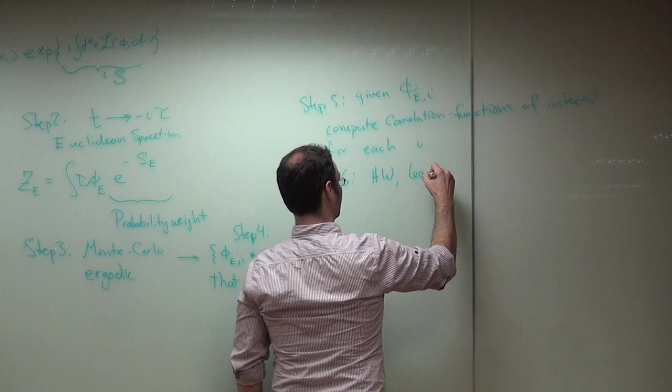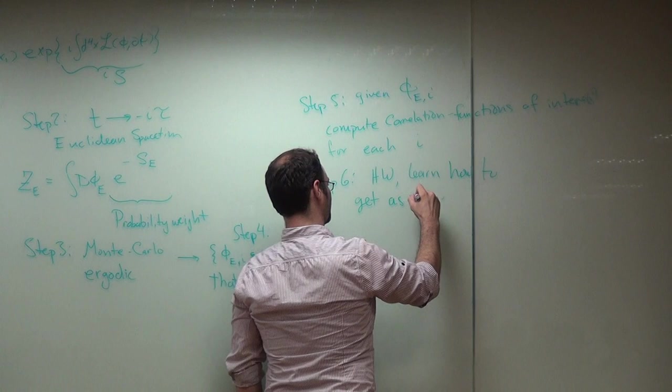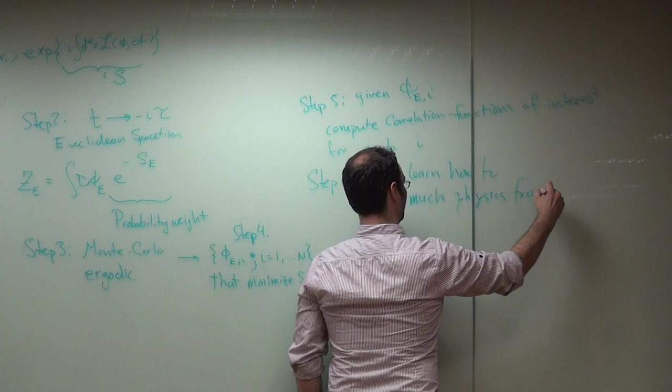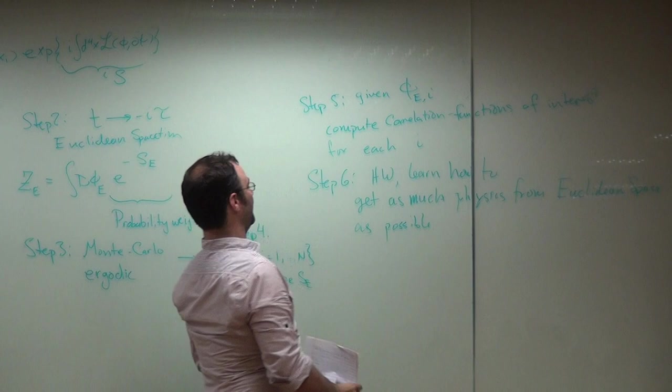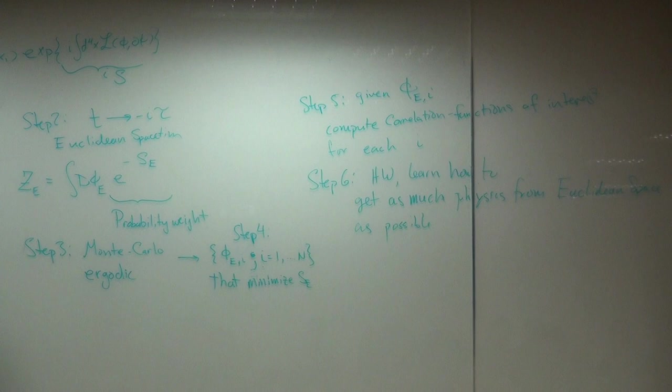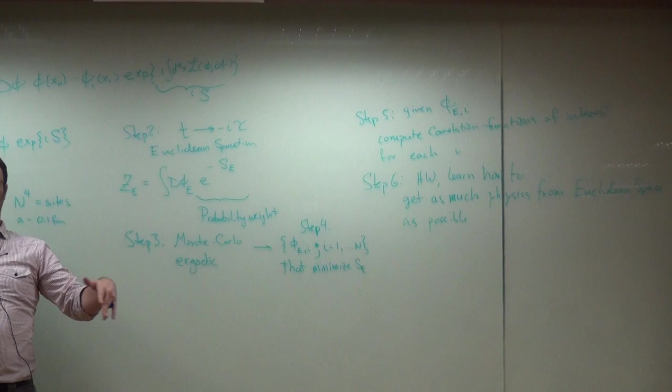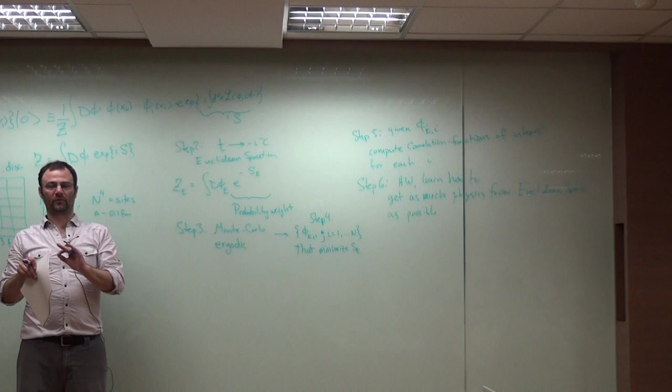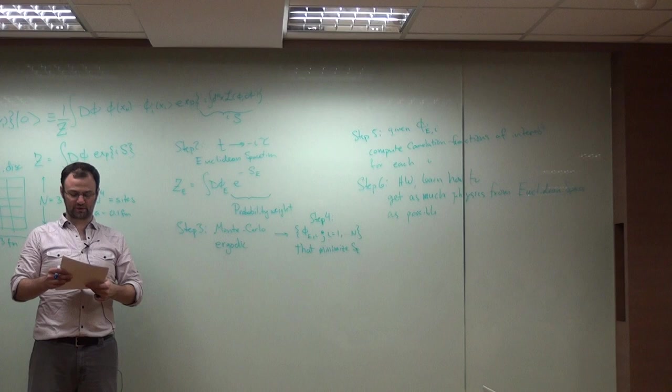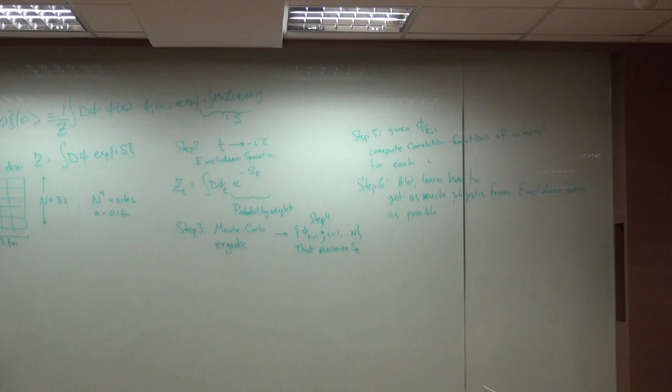And then step six, you have to do your homework. You have to learn how to get as much physics from Euclidean space as possible. Why? Because what we've done since we've discretized the theory, we solved it on a discrete set of imaginary time. What does that mean? If you only have a finite n and a discrete set of time, there's no unique way to analytically continue back to Minkowski space. So the only thing you can do is get information out of these Euclidean space correlation functions. So that's important. We have to think what kind of information can we get from those correlation functions. And we'll talk more about that in the next lecture. Okay, so any questions?